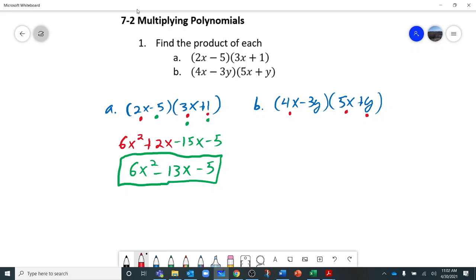4x times 5x is 20x squared. 4x times y is 4xy.